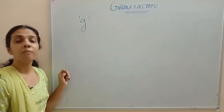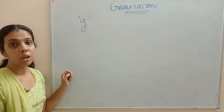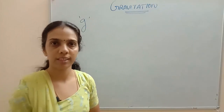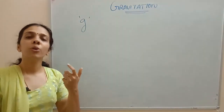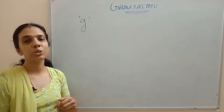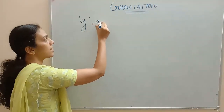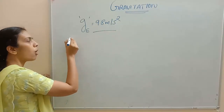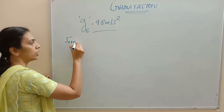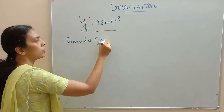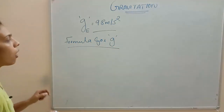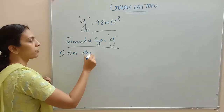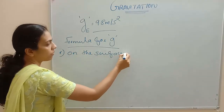We are going to find out the value of g or a formula for g. The value of g we already know — it is 9.8 meters per second squared. But how can we derive that for Earth the acceleration due to gravity is 9.8 meters per second squared? We are going to find out the formula for acceleration due to gravity on the surface of Earth.